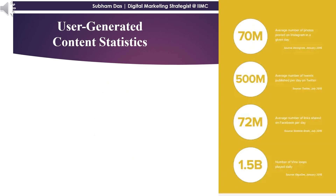Here are some statistics for user-generated content that you should know. 70 million pictures are uploaded daily on Instagram. 500 million tweets about user-generated content are produced daily according to Twitter. 72 million links on Facebook are related to user-generated content, and 1.5 billion videos — or loops, as they call them — are played daily on Vine. These statistics show how large the user-generated content market is.